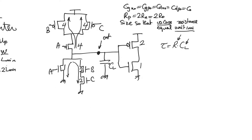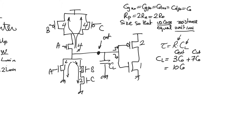Now let's find CL, the loading capacitance at the output node. CL consists of 3C0 from the gate capacitance seen from the next stage (external capacitance), plus internal capacitance of 4 + 1 + 2 = 7C0. So the total CL is 10C0.